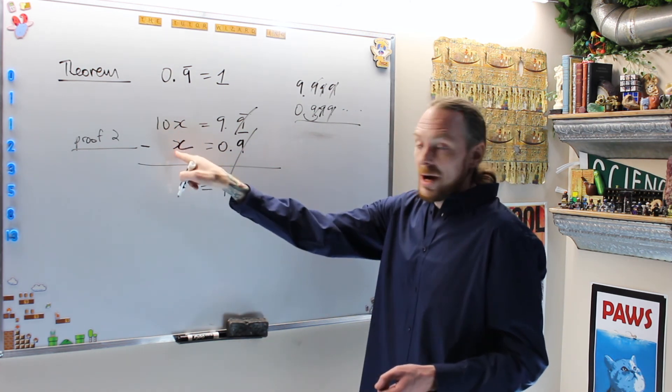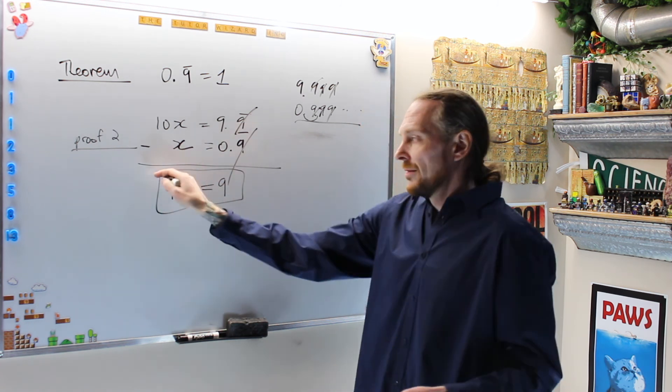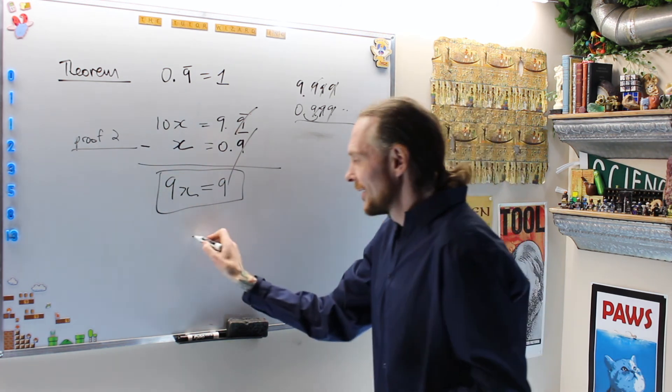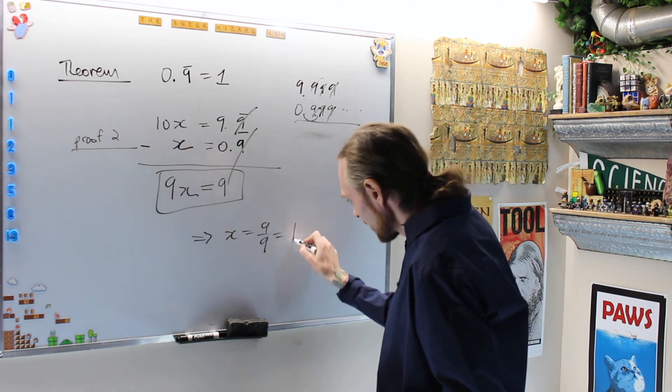What's 10x minus x? 9x. Solve for x: x equals 9/9, which is 1.